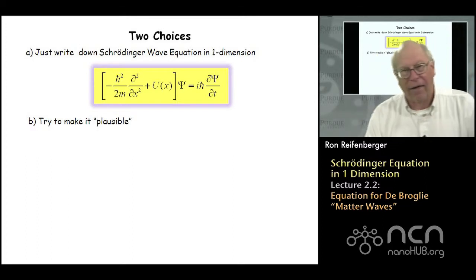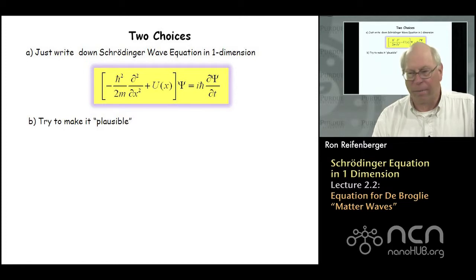There are two choices that I have in preparing this lecture. It's actually a dilemma. One choice is I could just write down Schrodinger's equation, which is written in this yellow box. I can say this is it. The other option that I can try to follow is I can try to make that equation plausible and somewhat understandable to you. So I'm going to follow the second option.